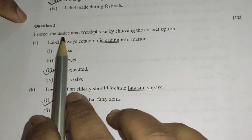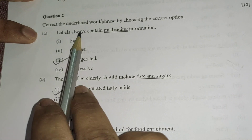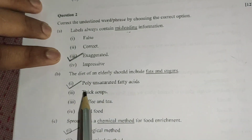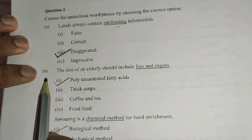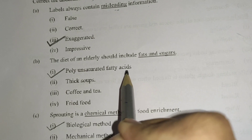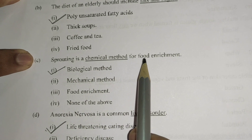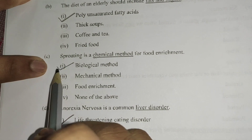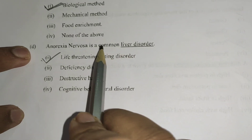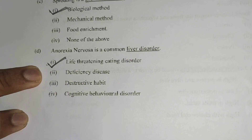Question 2: Correct the underlined word or phrase by choosing the correct option. (A) Labels always contain misleading information — replace 'misleading' with option 3: exaggerated. (B) The diet of an elderly should include fats and sugar — replace with option 1: polyunsaturated fatty acids. (C) Sprouting is a chemical method for food enrichment — replace 'chemical' with biological method. Sprouting is a biological method. (D) Anorexia nervosa is a common liver disorder — it is not a liver disorder; it is option A: a common life-threatening eating disorder.